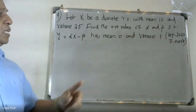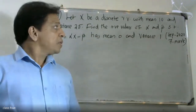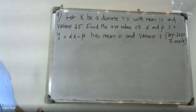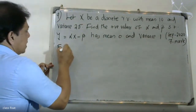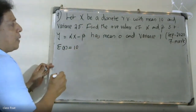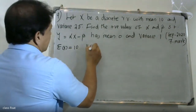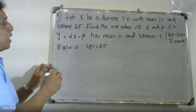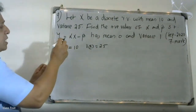This is September 28th, 2020. This is a 7-mark question. We are given that X is a discrete random variable with mean — that is, expectation of X — equal to 10, and variance of X equal to 25. We need to find positive values of alpha and beta such that Y equals alpha X minus beta.